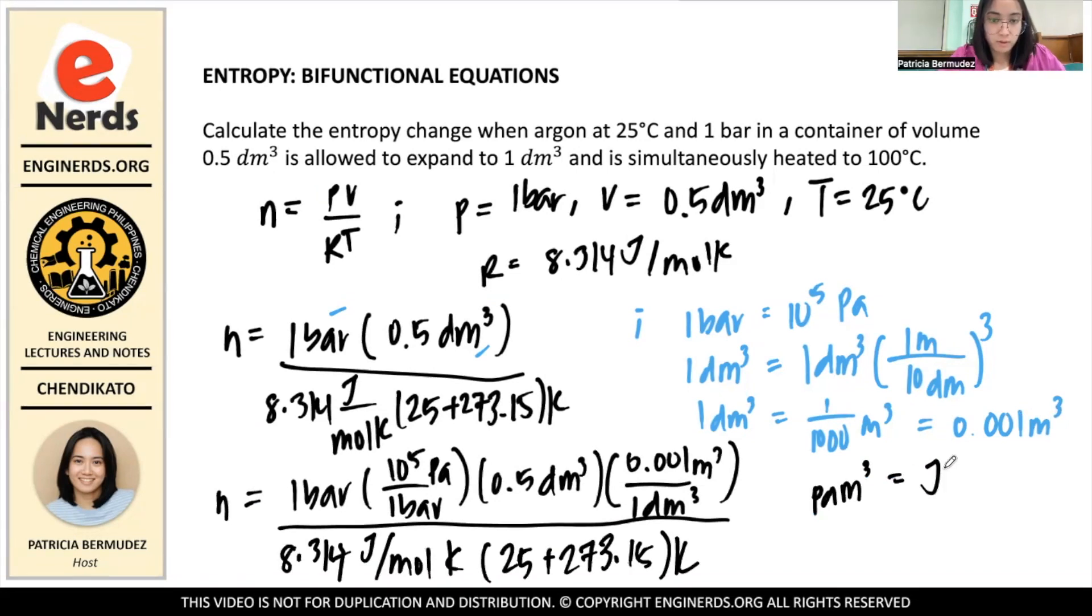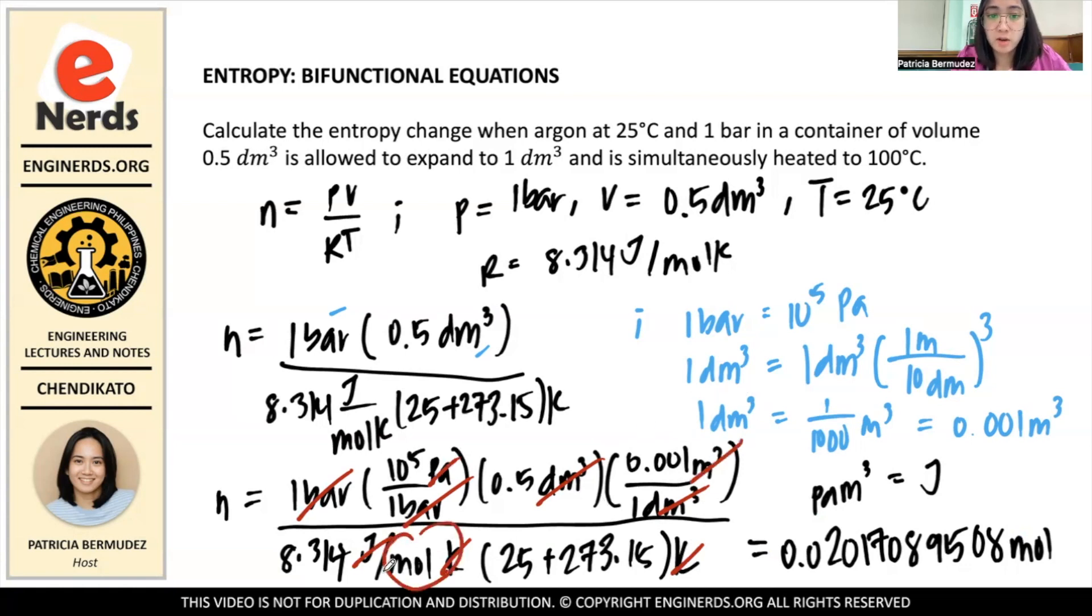Calculating this, we have 10⁵ times 0.5 times 0.001 divided by 8.314 times 25 plus 273.15. Our number of moles equals 0.020170895081. And you can see that mole remains, dm³ cancels, kelvin cancels, and we know that joules equals pascal·meter³ so they cancel, and what remains is mole. And since it's in the denominator of the denominator, it goes to the numerator, so that's our value for n.